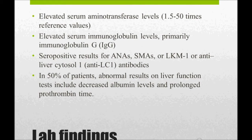The important lab findings are elevated serum aminotransferases — both AST and ALT are elevated. There will also be elevation of IgG. Antibodies present include ANA, SMA, LKM-1, and anti-liver cytosol 1. ANA and SMA are very important for USMLE. In about 50 percent of patients, abnormal liver function tests include decreased albumin levels and prolonged prothrombin time.